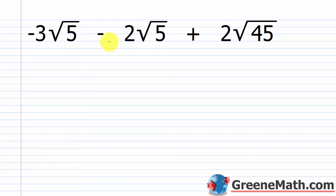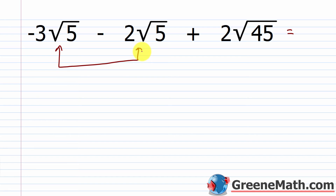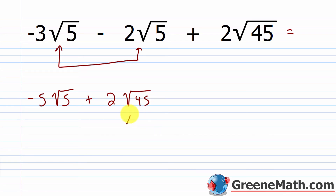Let's look at another one: negative 3 times the square root of 5 minus 2 times the square root of 5 plus 2 times the square root of 45. As we look at it right now, we don't have like radicals all the way across. But I can combine the first two: negative 3 minus 2 is negative 5 times the square root of 5, and then plus 2 times the square root of 45. Now I can simplify the square root of 45 — it's the square root of 9 times the square root of 5.